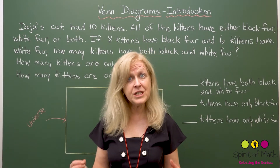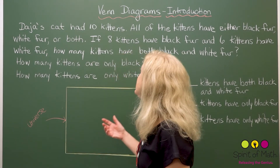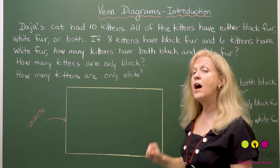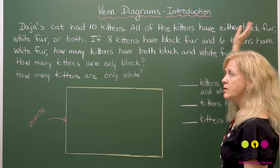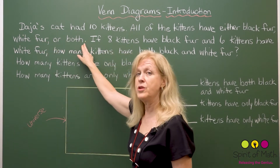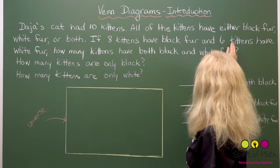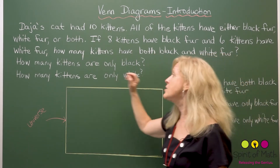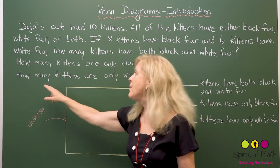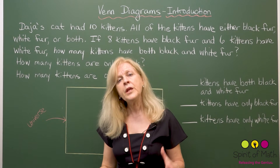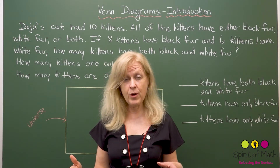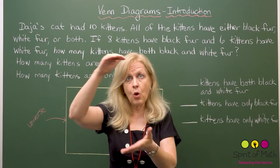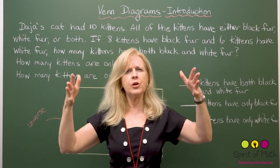Let's look at a question and you'll see why this is considered a Venn Diagram question. Daja's cat had 10 kittens. All of the kittens have either black fur, white fur, or both. If eight kittens have black fur and six kittens have white fur, how many kittens have both black and white fur? The question also asks: how many kittens are only black and how many kittens are only white? So Daja has 10 kittens — we're going to call that the kitten universe.